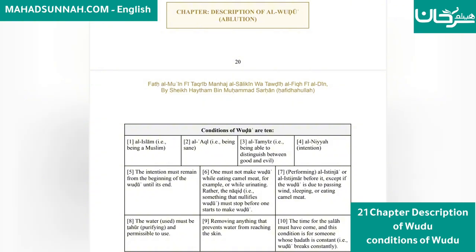Condition 5: The intention must remain from the beginning of Wudu until its end. Condition 6: One must not make Wudu while eating camel meat, for example, or while urinating. Rather, the naql — the something that nullifies Wudu — must stop before one starts to make Wudu.